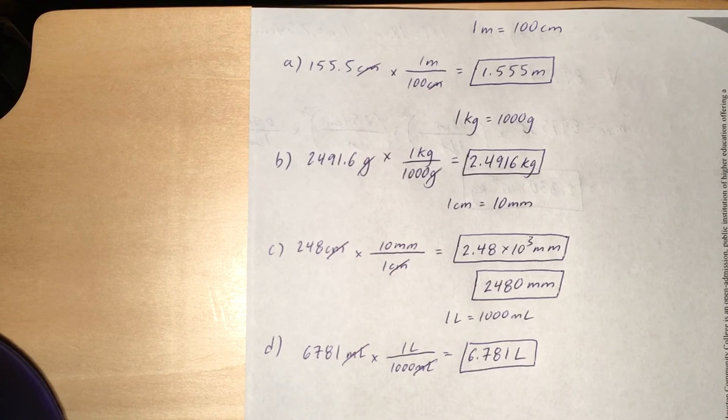We're going to take 6,781 milliliters and convert them to liters by putting the milliliters on the bottom and the liters on the top. That will cancel out our mils, leaving us with liters, giving us the final answer of 6.781 liters.